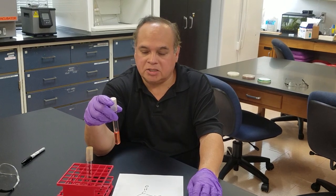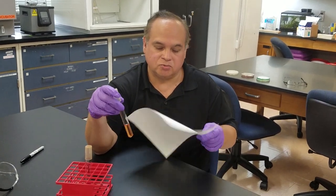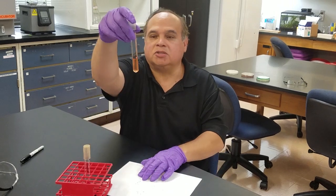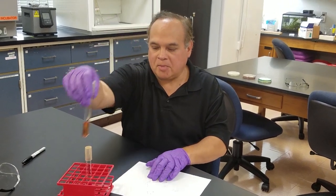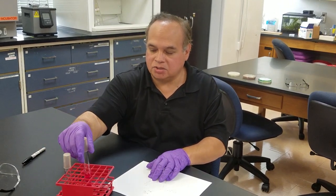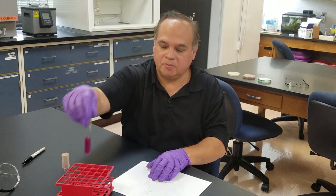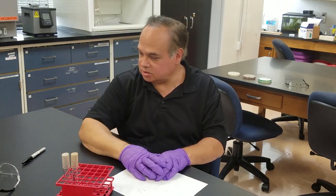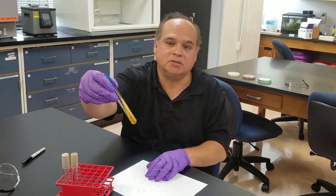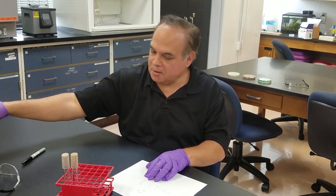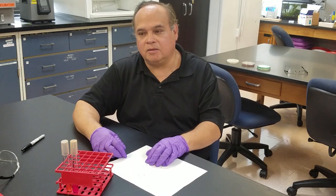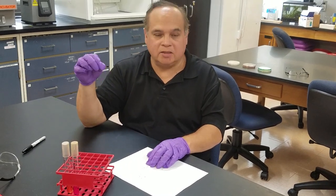Phenol red at neutral conditions is orange, at alkaline conditions it is fuchsia, and at acidic conditions it's yellow like this. What you do here is you take an inoculating loop and you inoculate the organisms you want to test.